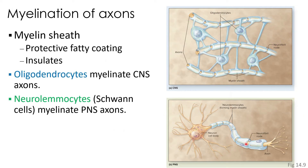Part of the axon is wrapped in a myelin sheath — it's a protective fatty coating that gives it a glossy white appearance. This helps to support, protect, and insulate an axon. Oligodendrocytes are found in the central nervous system, and neurolemocytes — also known as Schwann cells — are found in the peripheral nervous system. Both of these cells wrap themselves around the axons like electrical tape wrapped around a wire and produce myelin, which is an insulator of electrical activity.